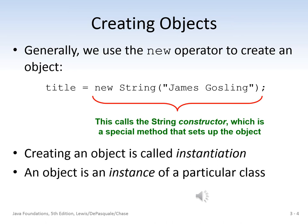Typically, we use the new operator when we want to create an object, as in the example here: title equals new. So we're creating a new instance of the String class. And new calls the String constructor, which is a method that sets up the object. When we create an object, it's called an instantiation, and an object is an instance of a particular class. In this case, title is an instance of the String class.